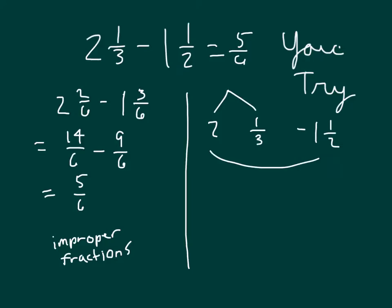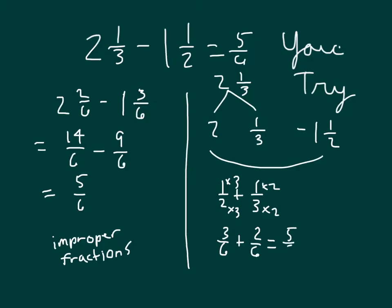We could also use a number line approach, thinking about this as 2 and decomposing 2 and 1 third into 2 put together with 1 third. Then we're subtracting 1 and 1 half from there. So we have 2 minus 1 and 1 half first, which is 1 half. Then we add 1 third to that because our answer should be 1 third more, since we actually started with 2 and 1 third. Getting common denominators — times 3 and times 2 — that's 3 sixths plus 2 sixths, which equals 5 sixths. Our answer is 5 sixths.